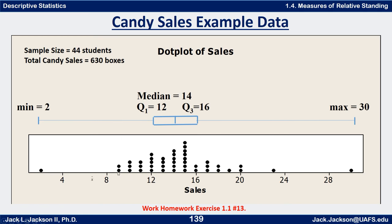With 44 students, the median will be halfway between the 22nd and 23rd values. Counting through the dot plot, the 22nd and 23rd values are both 14s — you average 14 and 14 to get 14. So 14 is the median. Since n is even, we have 22 values in the lower half and 22 in the upper half — the median itself is not counted.